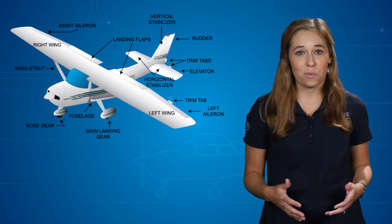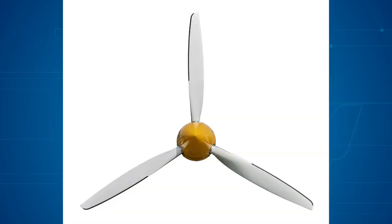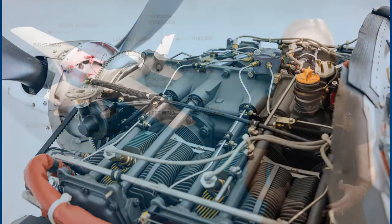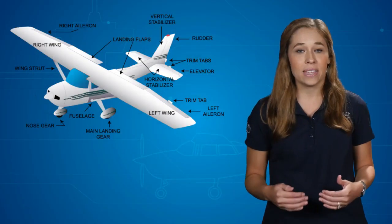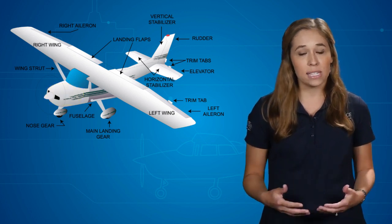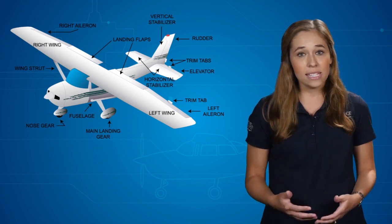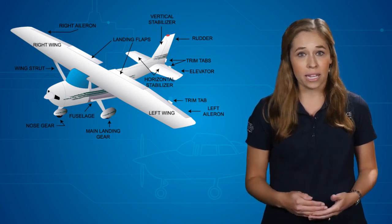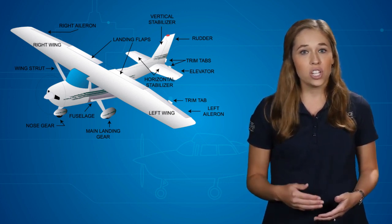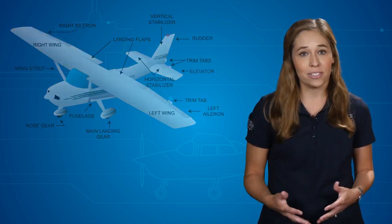In the front of the airplane, we have a propeller. Much like the wings, the shape of the propeller is an airfoil. The propeller is attached to the power plant, or engine, which is located inside the cowling. The engine spins the propeller, which produces thrust in the same way that wings produce lift. This thrust is what propels the airplane through the air. The engine also drives other systems that support the operation of an aircraft.